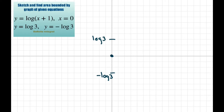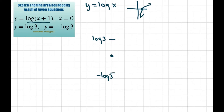So basically let's look and see what we have. If we had y equals log of x, the parent function would start here at 1 and looks like this. For us, this is going to be a horizontal shift to the left by 1, so we're just going to move this over like this — just shifted the whole thing over.